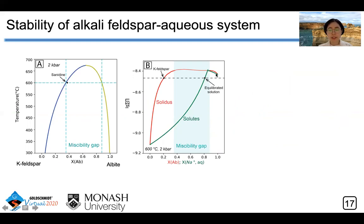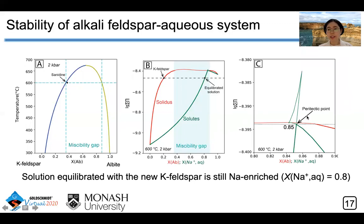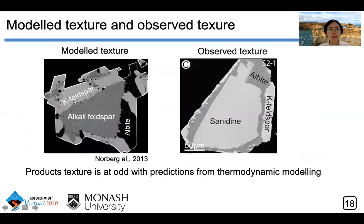The green line represents sodium concentration in aqueous solution, and the red line represents sodium concentration in solid solution. The aqueous solution equilibrated with K-feldspar is still sodium-enriched. When the sodium concentration in solution decreases from 1 to 0, the peritectic point is reached — meaning that when sodium concentration in aqueous solution equals 0.85, the solution should be equilibrated with two different feldspars: albite and K-feldspar. This explains why sanidine is replaced by albite and K-feldspar simultaneously. This phenomenon has been observed in previous research, but the model texture differs from our observed zonation texture.